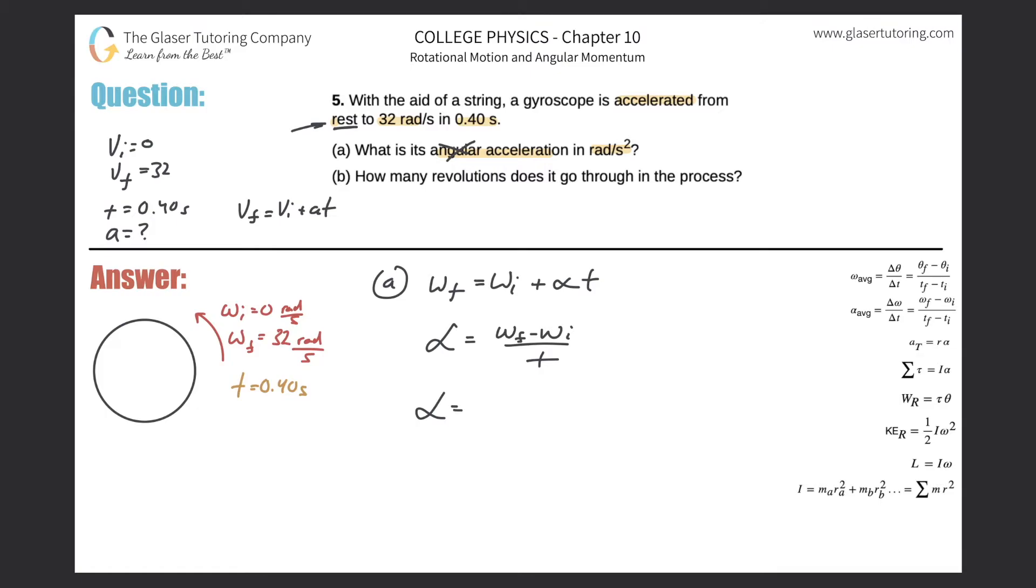Now all we have to do is plug in the values. The final is 32, the initial is zero, the time is 0.4 seconds. So here we get 32 over 0.4, which comes out to be 80.